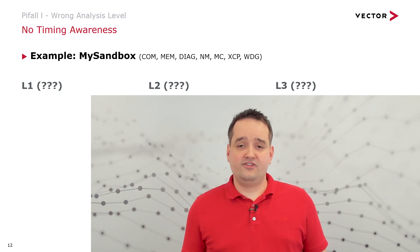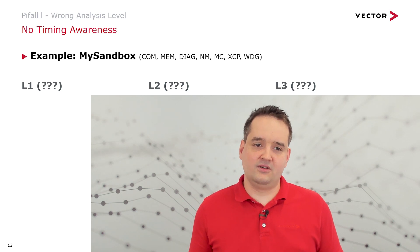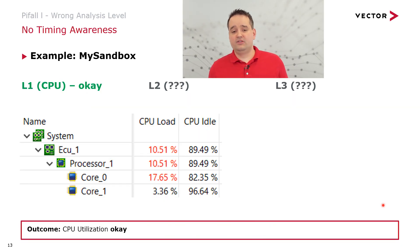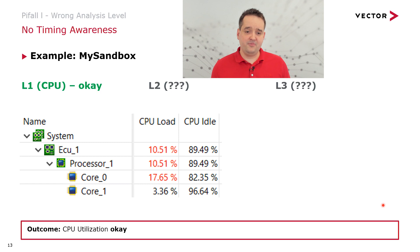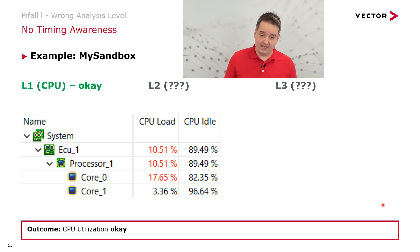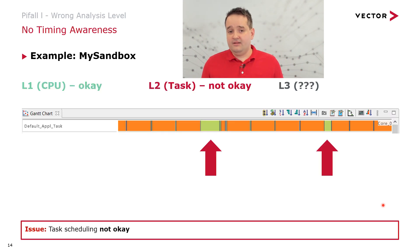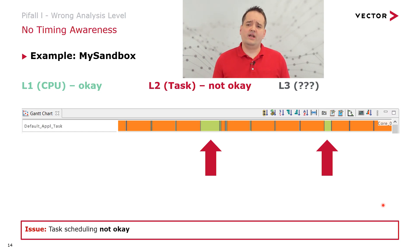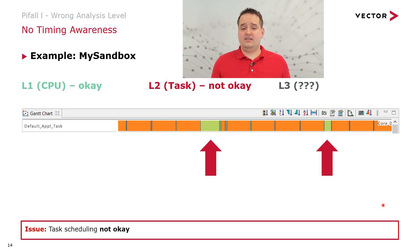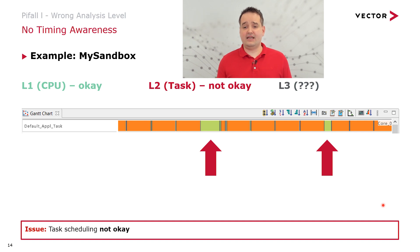Let's apply the three-level analysis. If we investigate the CPU load, we have a dual-core system with 80% CPU load on core 0 and 3.3% on core 1 — CPU load looks okay, we could continue integration. But if we apply level 2 analysis and look at task and OS scheduling, we see something is not correct. This default application task is not scheduled at the right point in time as expected from the software design. We found an issue — the task scheduling is not okay.